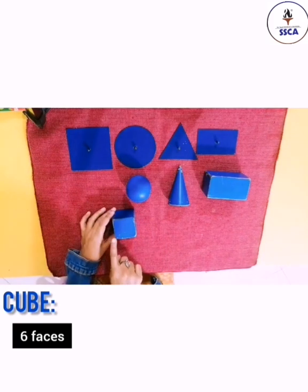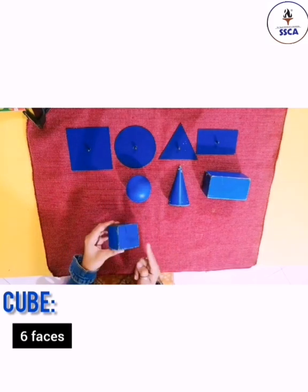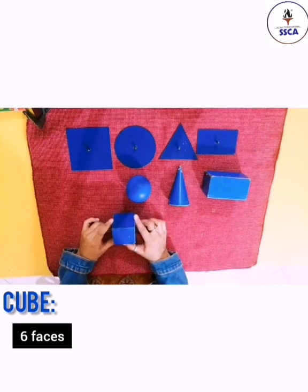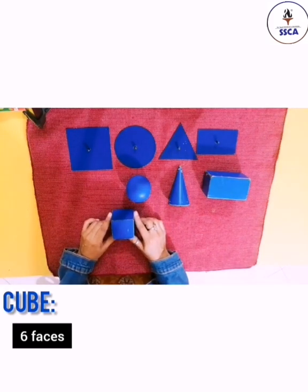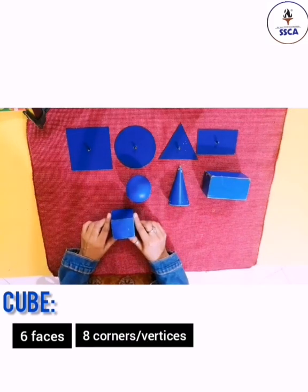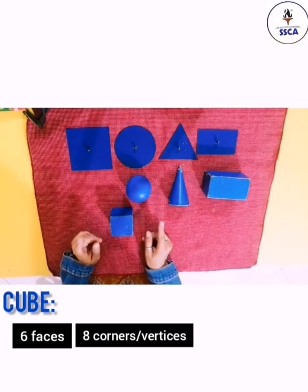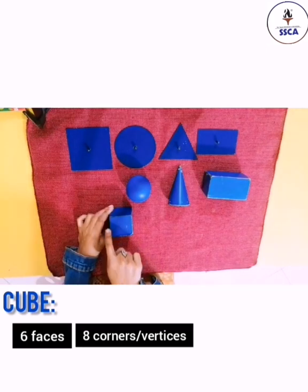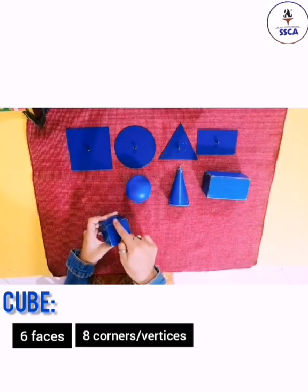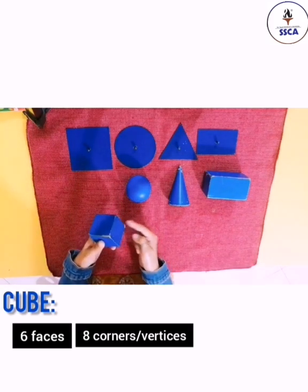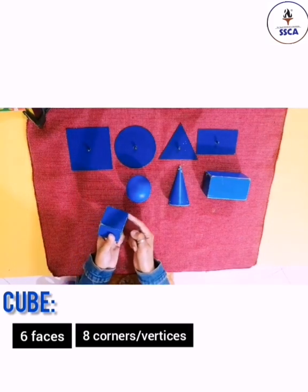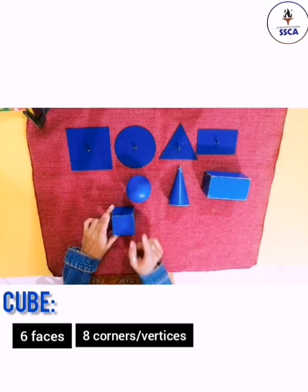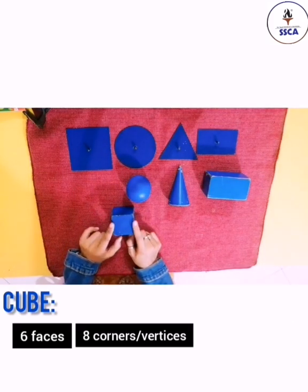Now let's count the corners: 1, 2, 3, 4, 5, 6, 7, 8. It has 8 corners. Corners ko haam vertices bhi kehte hain. It has 8 corners or vertices. Now let's count the sides: 1, 2, 3, 4, 5, 6, 7, 8, 9, 10, 11, 12. How many sides? 12 sides. Sides ko haam edges bhi kehte hain — edges. So the cube has 12 edges or sides.